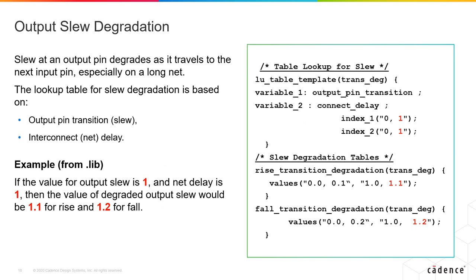Because the input signal is constant, and the signal is actually traveling across many stages along the path, the slew at the output of one stage degrades before it gets to the next stage and so on and so forth. As it travels along a long net, you'll see slew degradation happen.